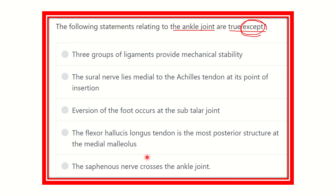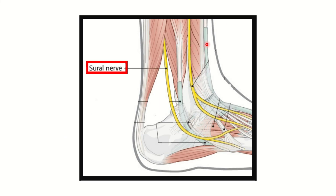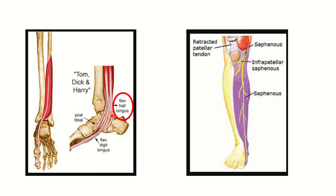In this picture, we can see the Achilles tendon inserted into the calcaneus, and we can see the sural nerve. The sural nerve lies in the lateral aspect of the Achilles tendon. Here we can see this is the lateral aspect and this is the medial aspect, so the sural nerve lies lateral to the Achilles tendon.